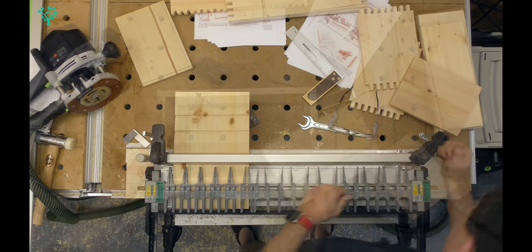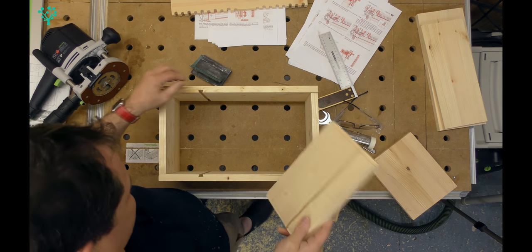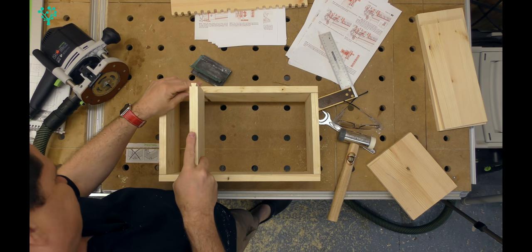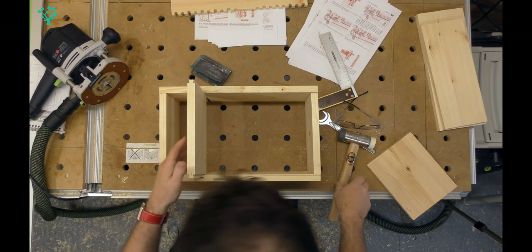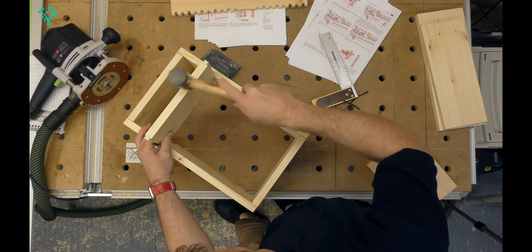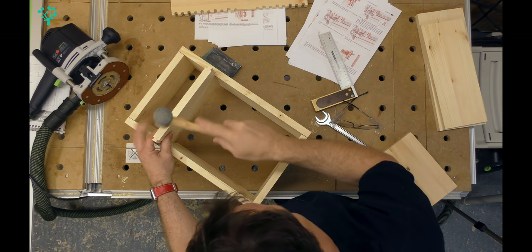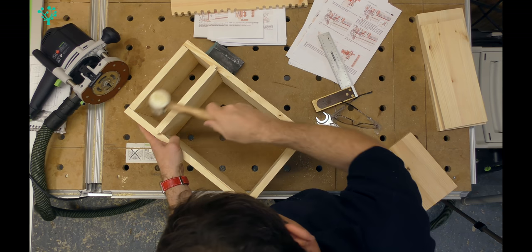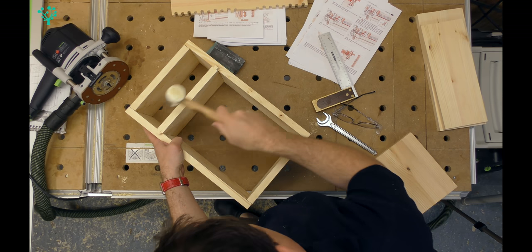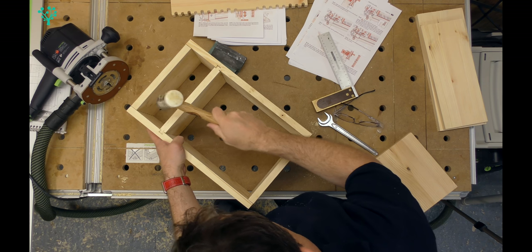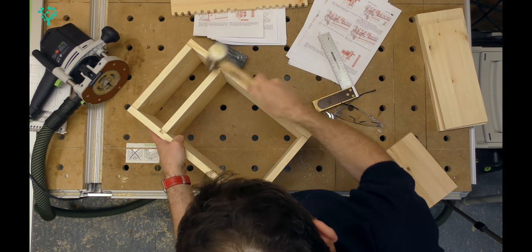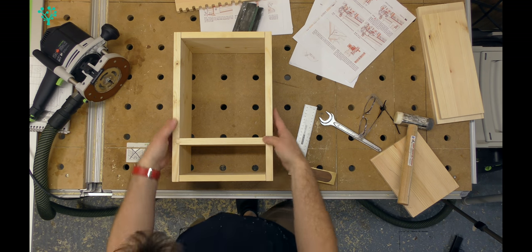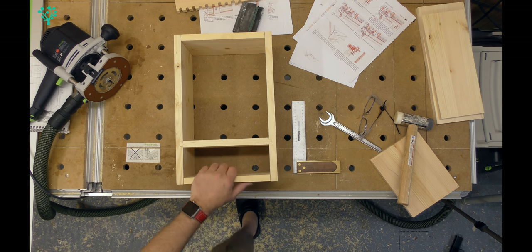Moment of truth. If we are doing well, this should fit in quite nicely. Exactly. There we go. That's pretty much it. That's how you do sliding dovetails on a lead jig.